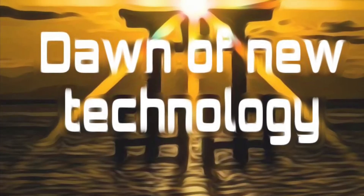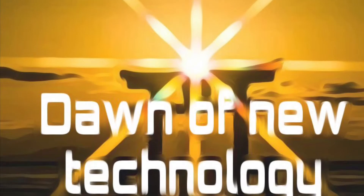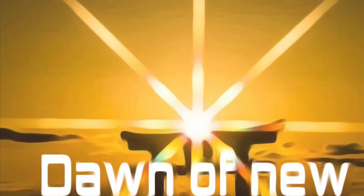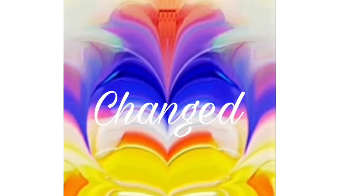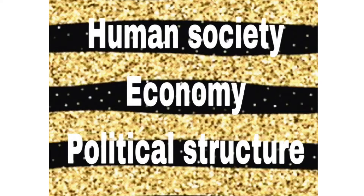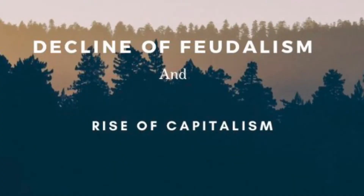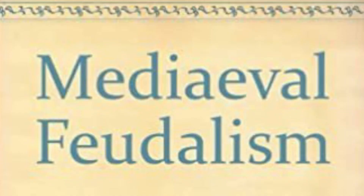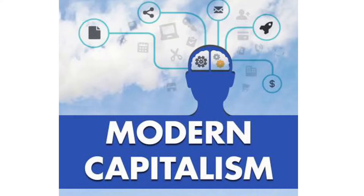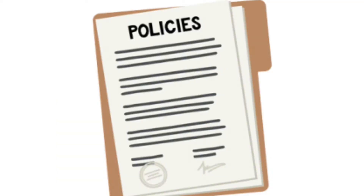The industrial revolution not only marks the dawn of new technology and innovations, it changed the very structure of human society, economy and political structure. The most important impact of the industrial revolution was the decline of feudalism and rise of capitalism. The medieval feudalism was transformed into modern capitalism. The capitalist class further influenced government policies which advanced their vested interests and political power.